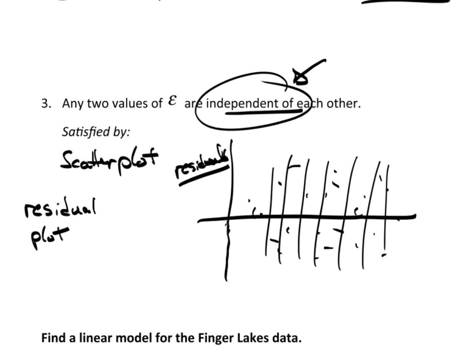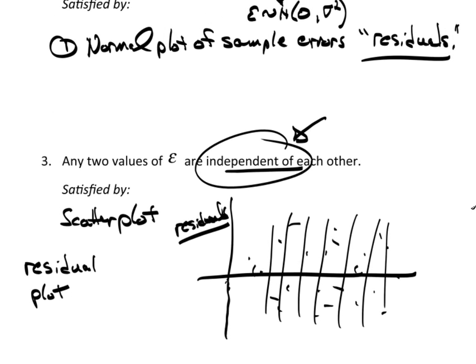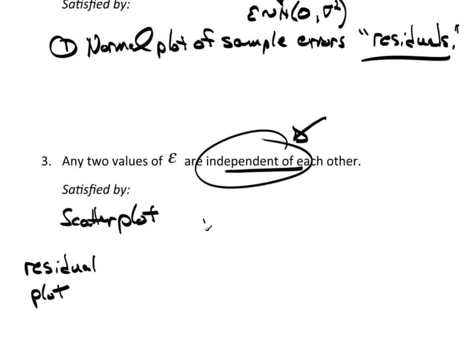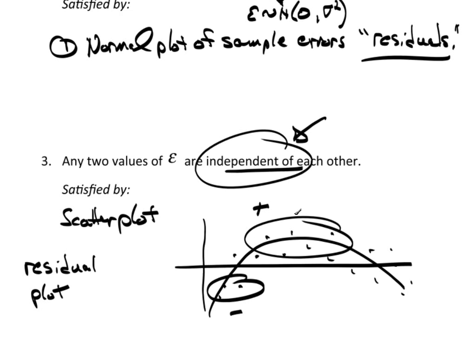What we don't want to see on a residual plot, is perhaps residual graphs that look like this. This is a huge problem. See this curvature? What this means is I have a bunch of negative residuals, followed by a bunch of positive residuals, followed by a bunch of negative residuals. That's a bad thing.